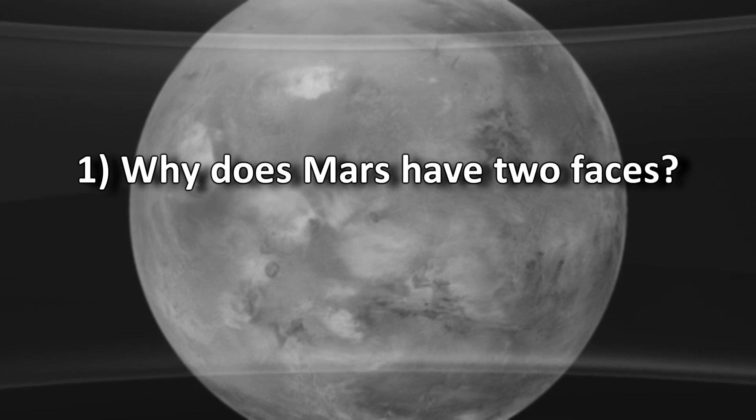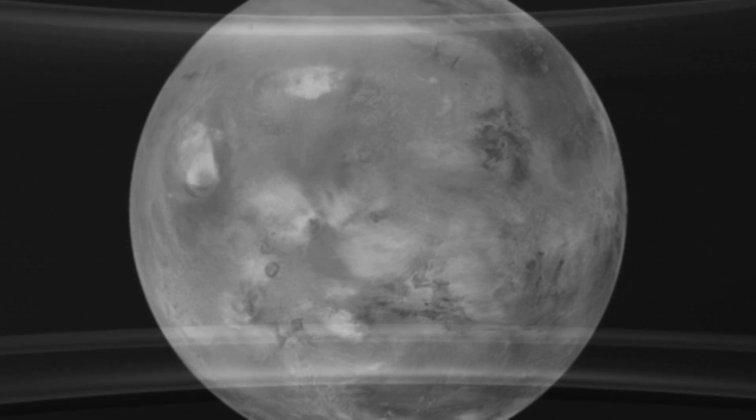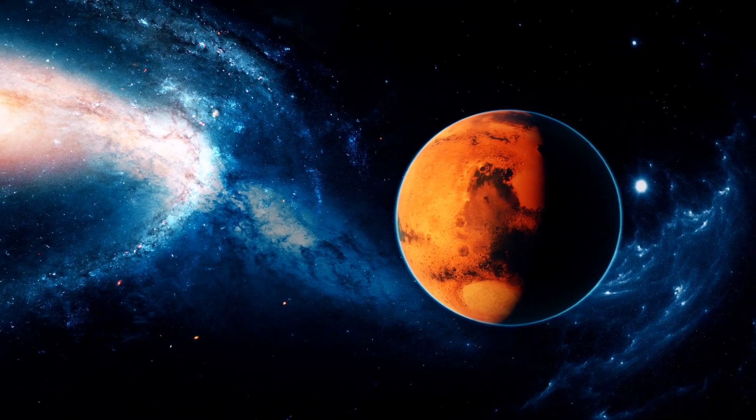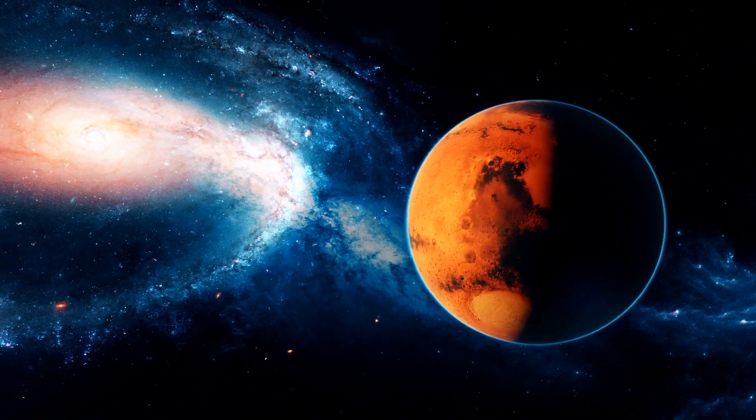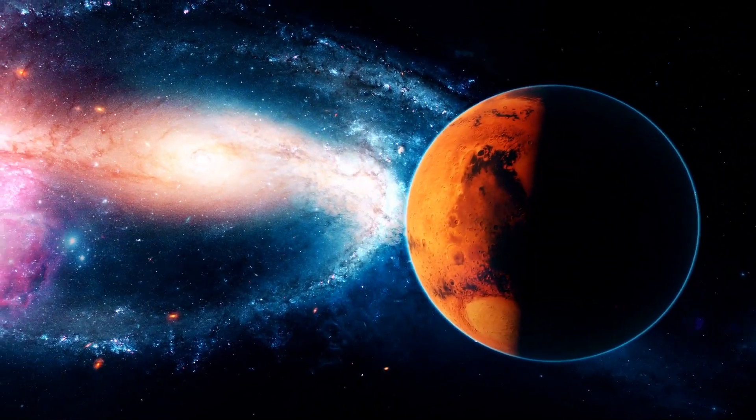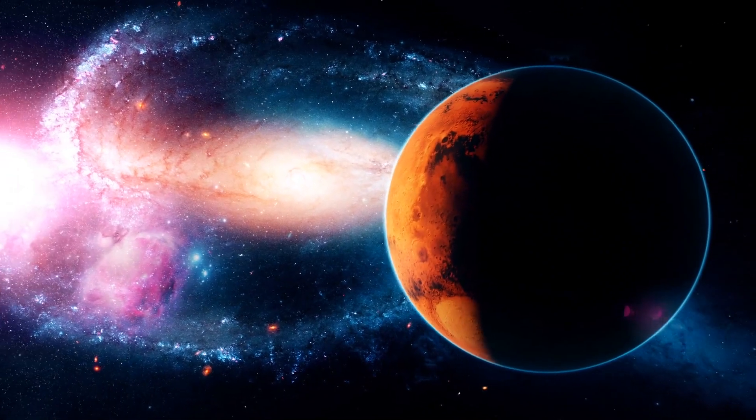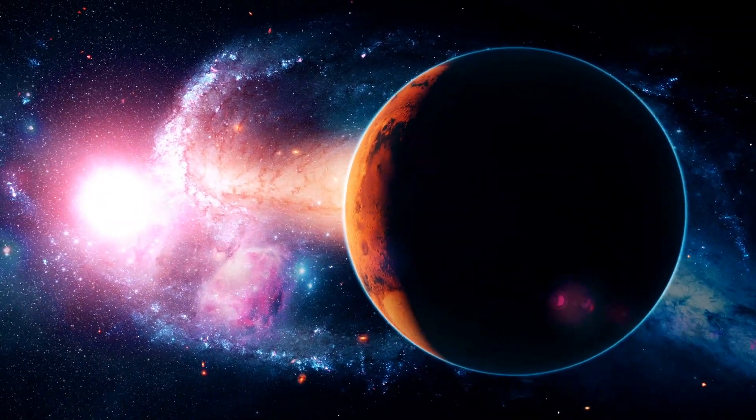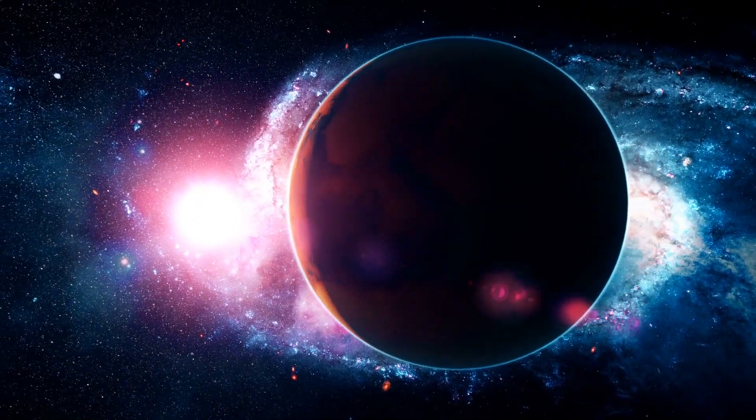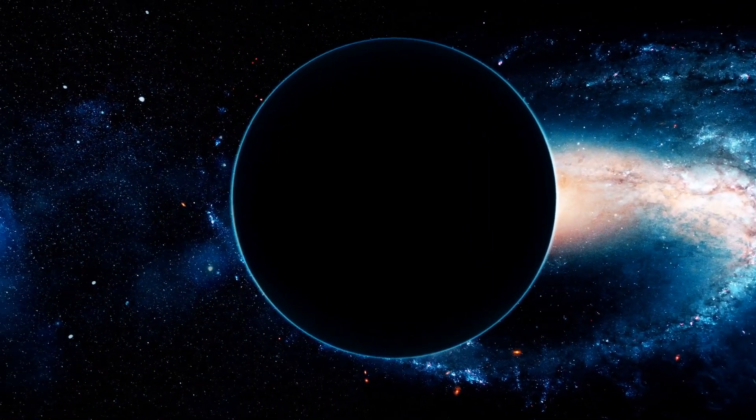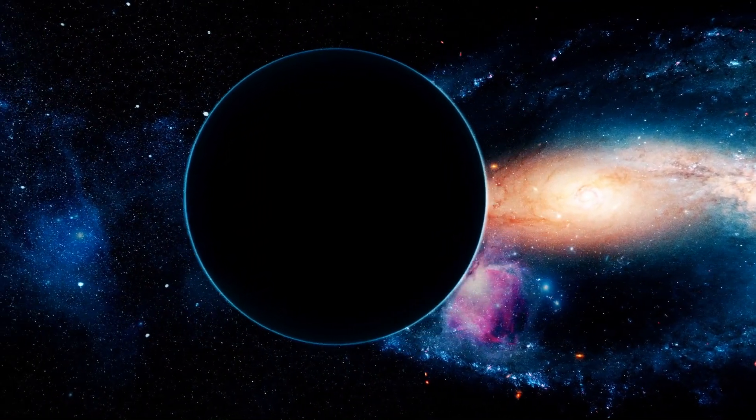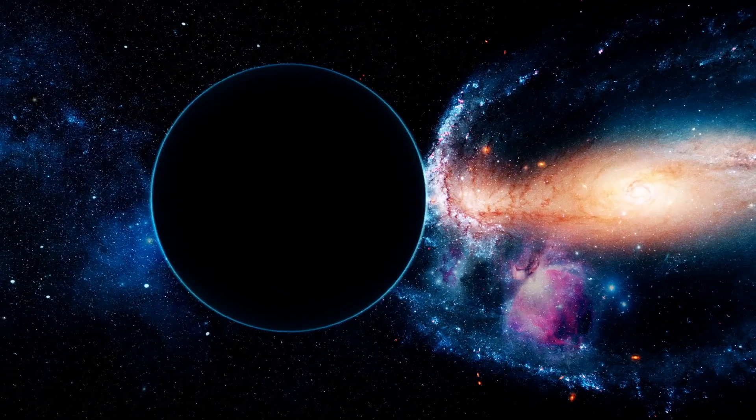Why does Mars have two faces? Mars, similar to Earth's moon, has different landscapes on its halves. The northern hemisphere of Mars is low-lying and is the smoothest, flattest surface in the entire solar system with no craters on this side. The smoothness is suspected to come from water that once flowed on the planet's surface.